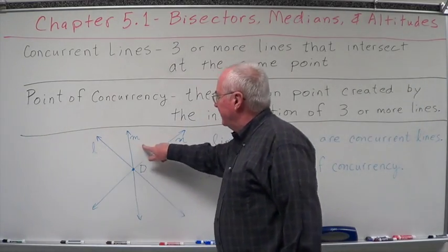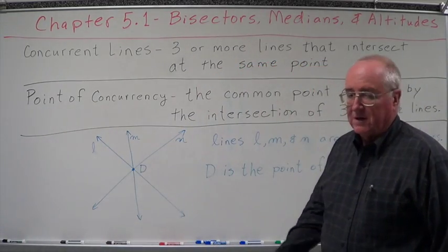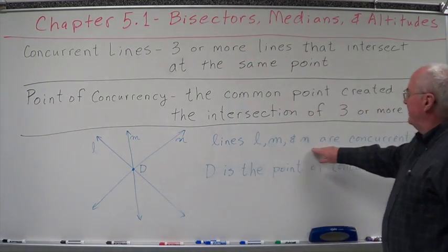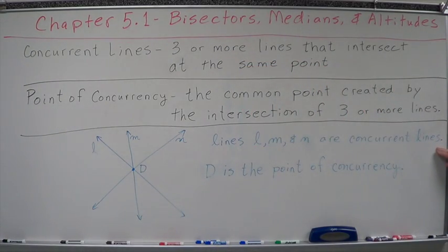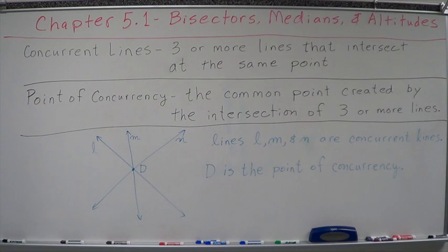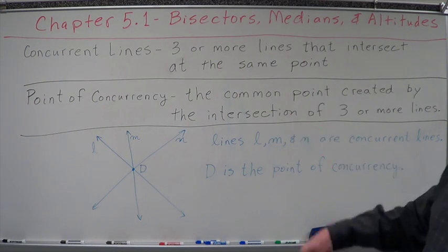Okay, now what does that look like? Let's say we have lines L, M, and N. And they all intersect at point D. Well, lines L, M, and N are concurrent lines. D is the point of concurrency. So we need those definitions. You need to have that in there.